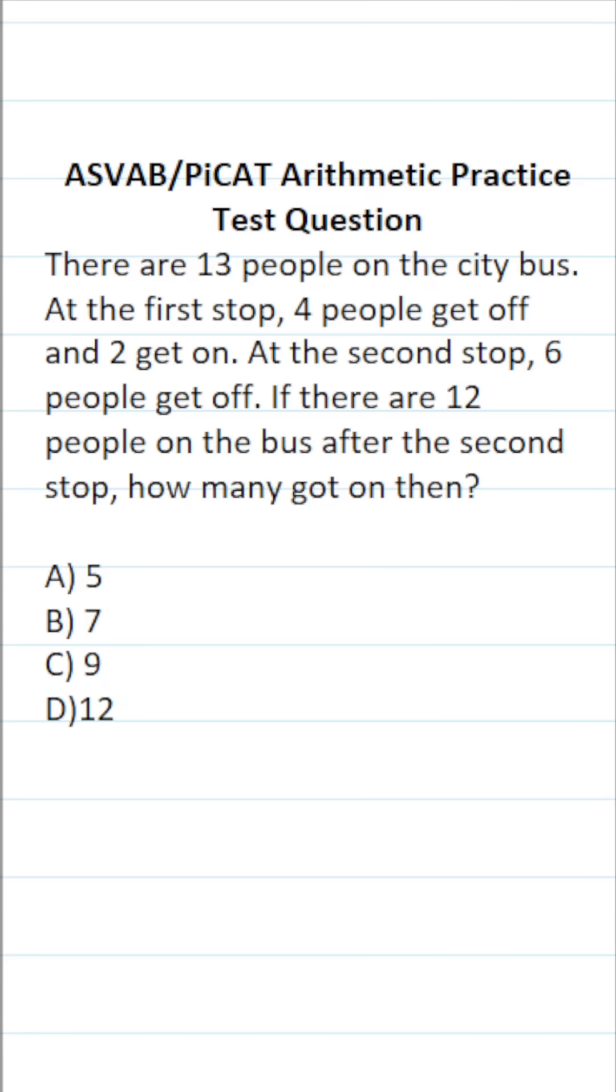This arithmetic reasoning practice test question for the ASVAB and PiCAT says there are 13 people on the city bus. At the first stop, four people get off and two get on. At the second stop, six people get off. If there are 12 people on the bus after the second stop, how many got on then?